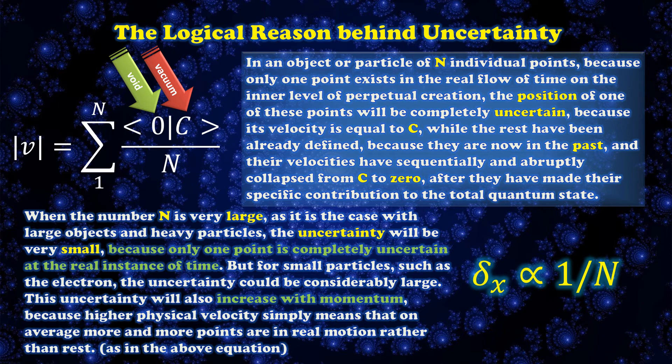If we suppose the particle is composed of n individual points, or monads, each of which is an instance of the single monad that is the only entity that exists in the real flow of time, then the total velocity of the particle is the time average of the velocities of all individual points, each of which is either at rest or moving at the speed of light at the particular single instance of the time of measurement.